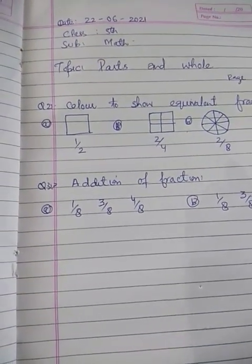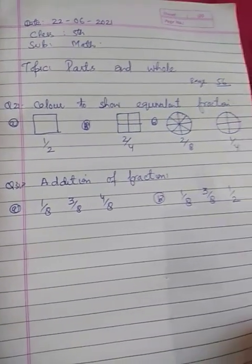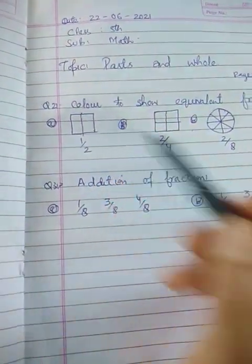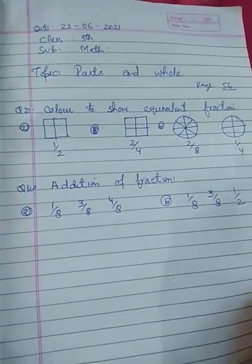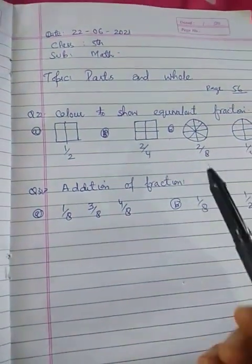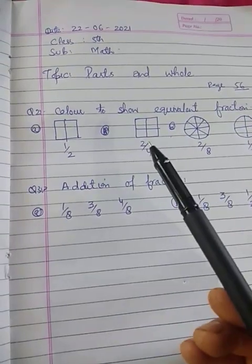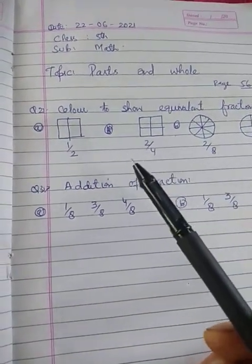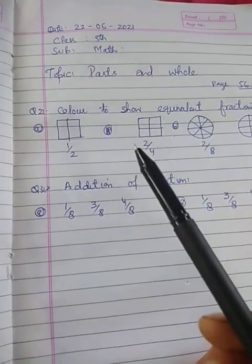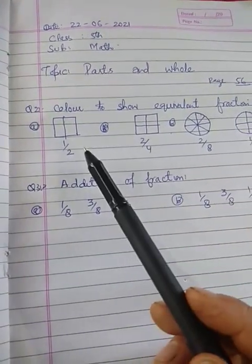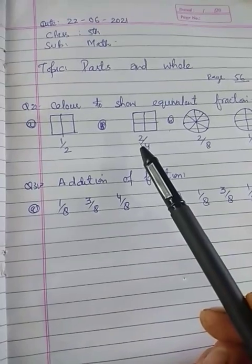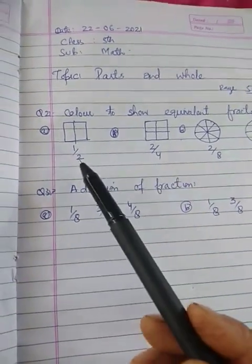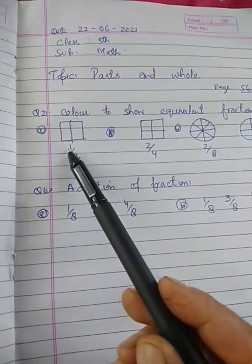Please open your textbook to page 56. In question number 2, we have to color to show equivalent fractions. Different figures are used as fractions. Suppose this figure is given, we have to color it.